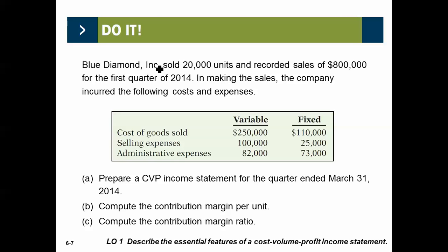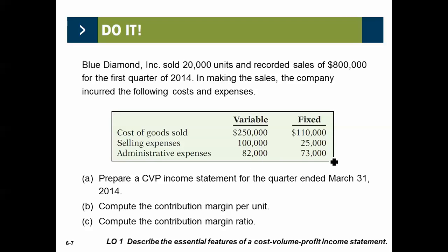Blue Diamond Inc. sold 20,000 units and recorded sales of $800,000 for the first quarter of 2012. The company incurred the following costs: cost of goods sold — variable on 20,000 units, total variable is $250,000. Selling expenses $100,000, so $5 each. Administration expenses. The fixed part of cost of goods sold, selling, and admin are also listed here.